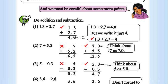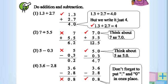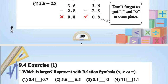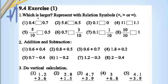7 should not be placed in the tenths place — it should be in the ones place. 0 plus 5 is 5, and 7 plus 5 is 12, so the answer is 12.5. Then 5 minus 0.3 is 4.7: 50 minus 3 is 47, put the decimal point. And 4.6 minus 2.8: 36 minus 28 is 8, so the answer is 0.8.